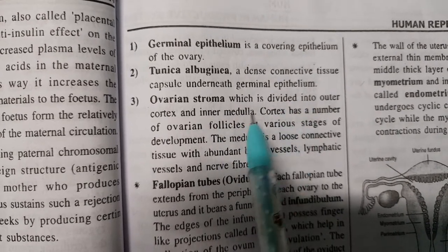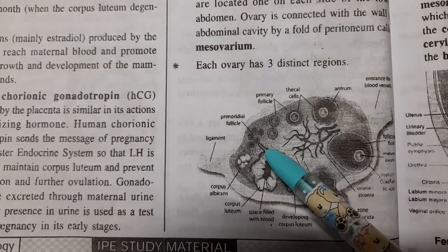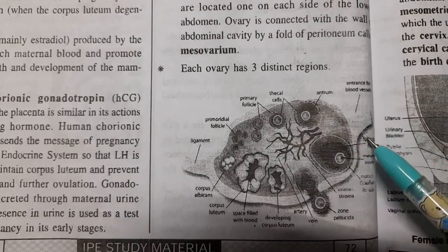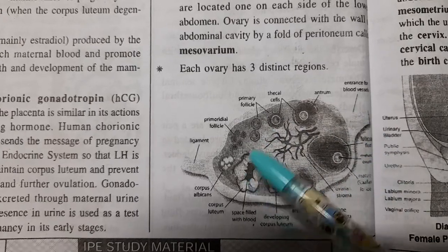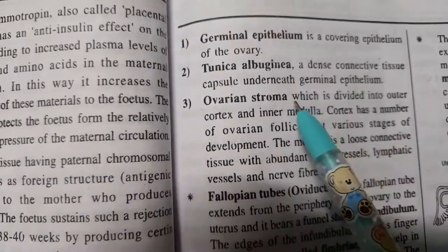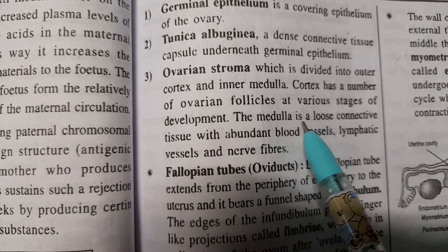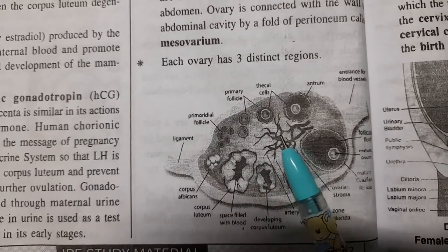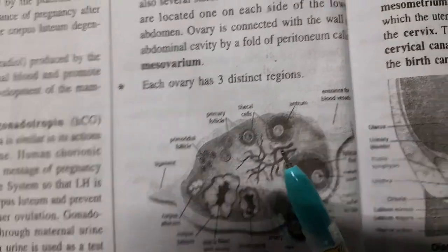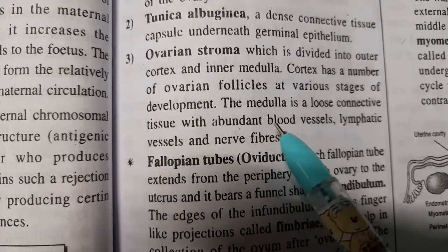The outer cortex has a number of ovarian follicles at various stages of development, including primordial follicles, primary follicles, and mature follicles. The inner medulla is a loose connective tissue with abundant blood vessels, nerves, and lymph vessels present here.